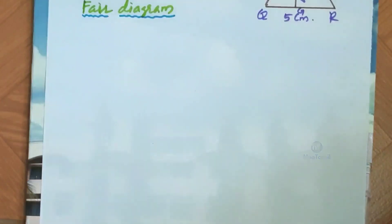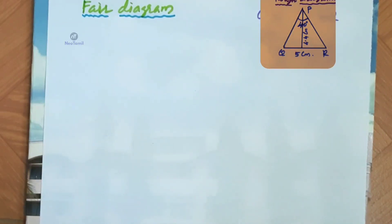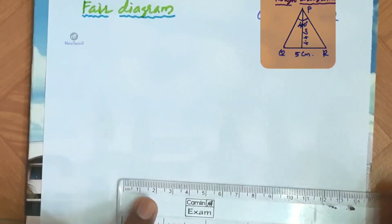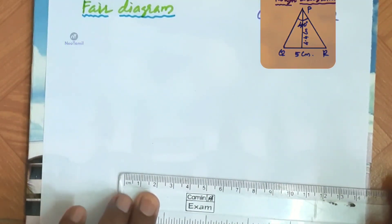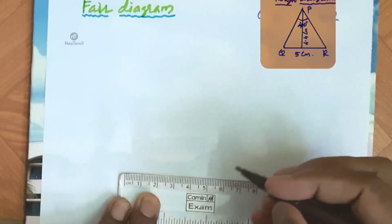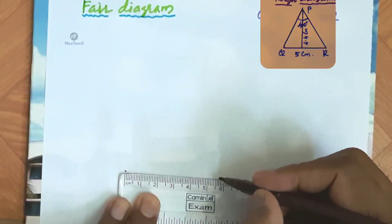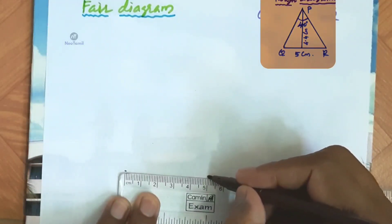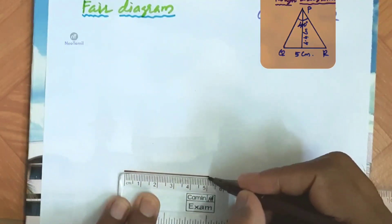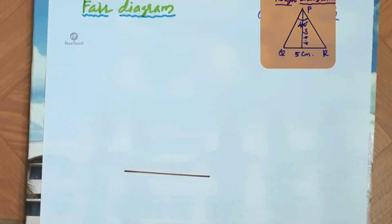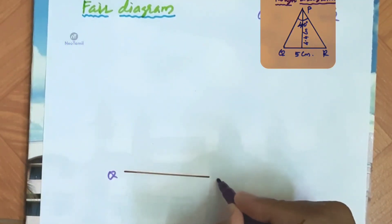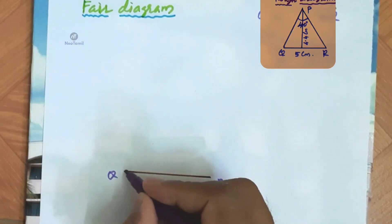Next we are going to take the actual diagram. First, draw the baseline using the scale. The base length is QR, which is 5 cm. Mark one vertex as Q and the other vertex as R, so QR equals 5 cm.